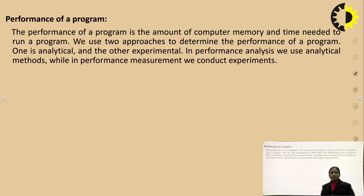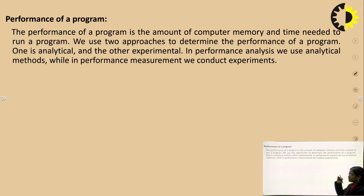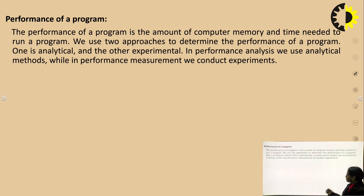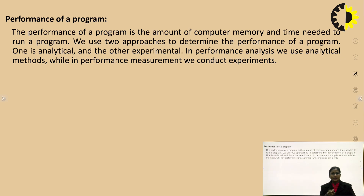Performance of a program is the amount of computer memory and the time needed to run a program — it refers to the space and time required to execute any program. We use two approaches to determine performance: first is the analytical method, and second is the experimental method. In performance analysis we use the analytical method, while in performance measurement we conduct experiments.